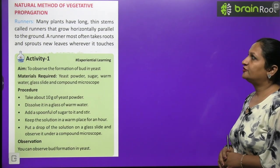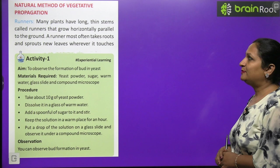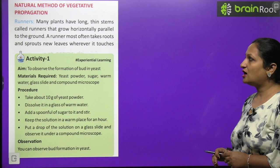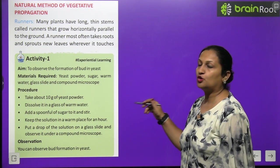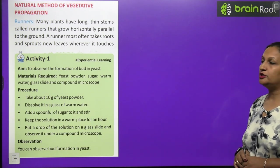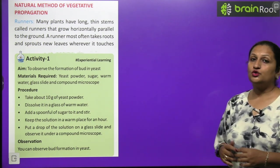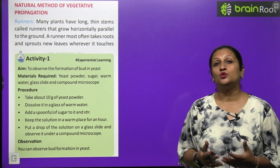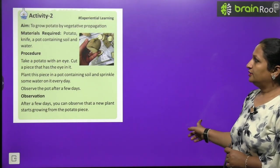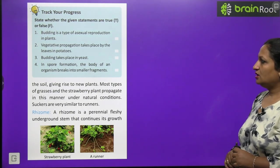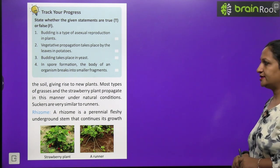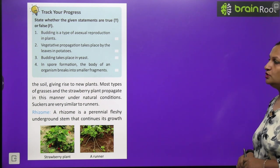This process is vegetative propagation. The outgrowth, we cut the part and put it in soil, and from this our new plant developed. So this type of reproduction is called as vegetative propagation. Natural method of vegetative propagation - runners. Many plants have long thin stems called runners that grow horizontally parallel to the ground. Most of the runners often take roots and sprout new leaves wherever it touches the ground. So wherever they touch the ground, new roots emerge and new plant development happens. Most types of grasses and the strawberry plant propagate in this manner under natural conditions. Suckers are very similar to runners.